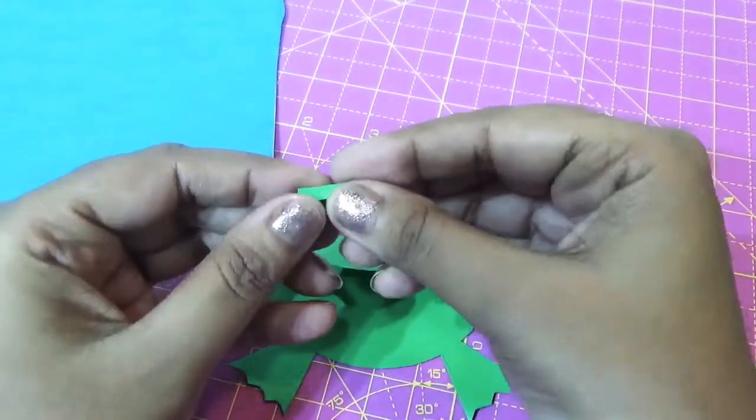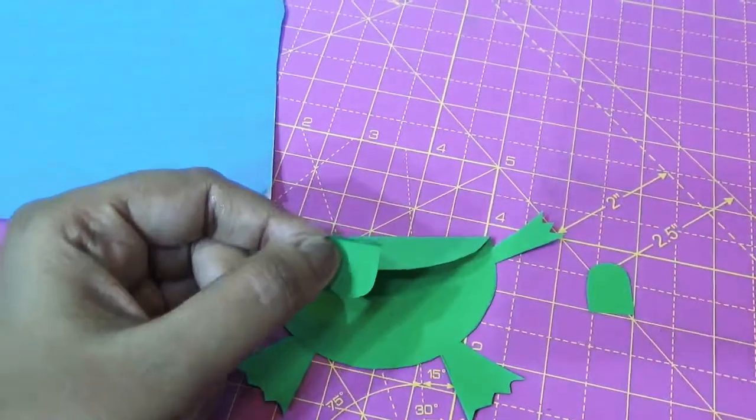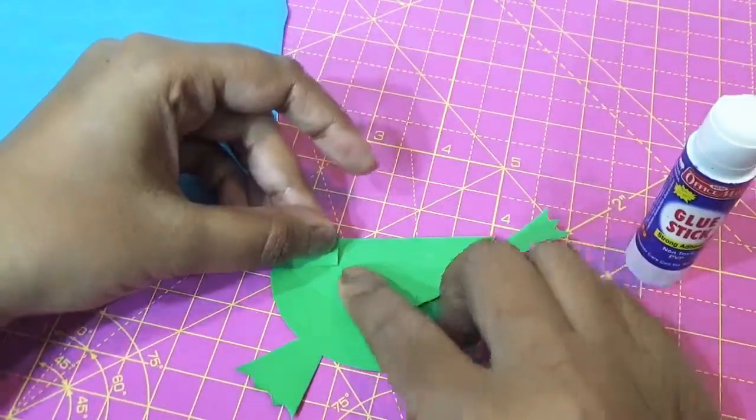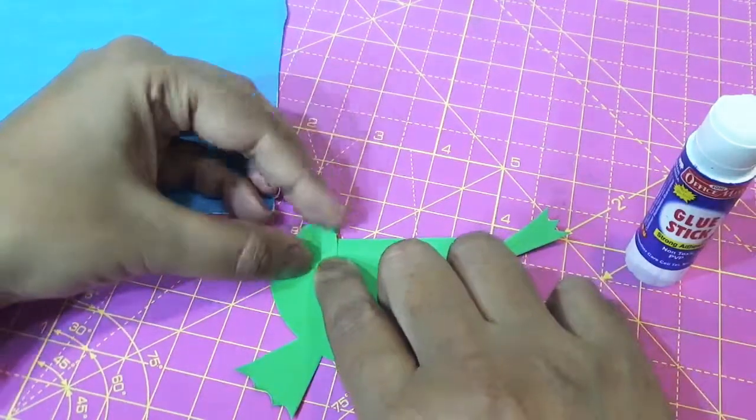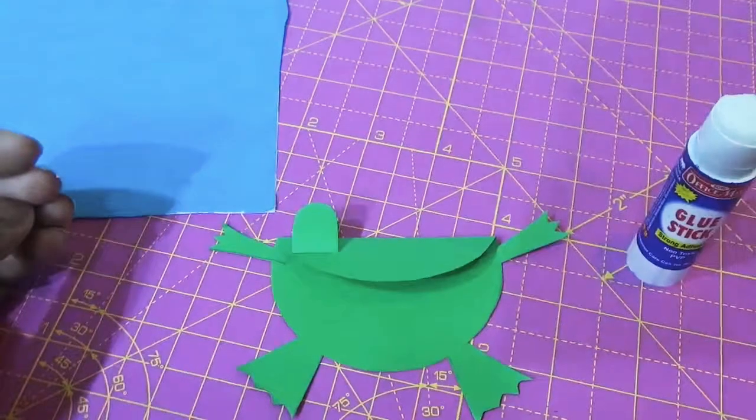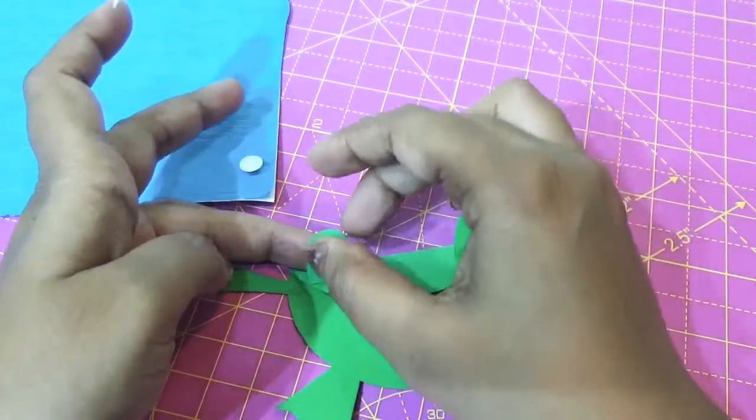Now I will cut the eyes and fold them a little bit. The folded area I will glue and stick at the top. There I will stick it, and I will put artificial eyes.